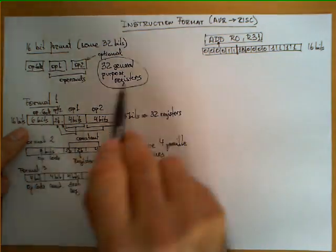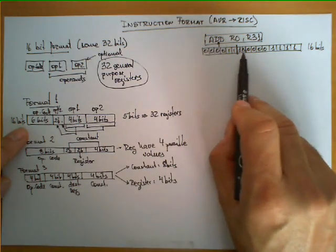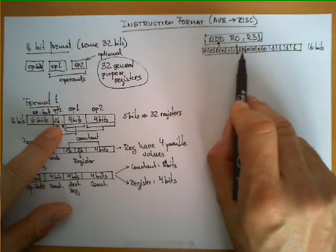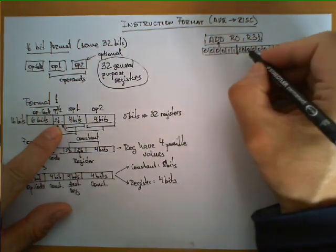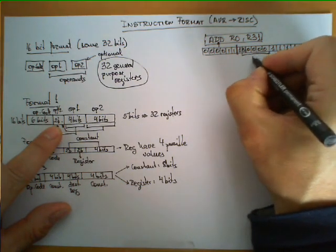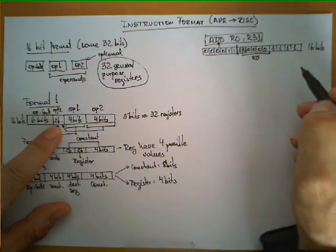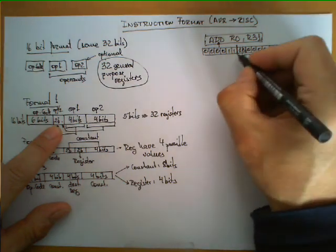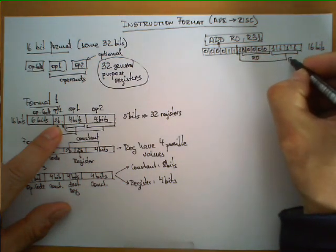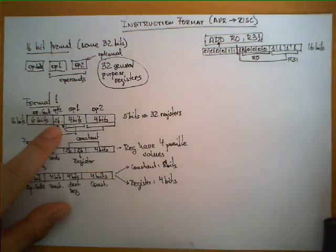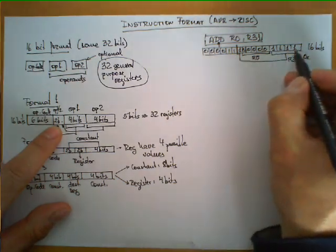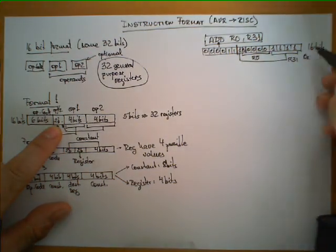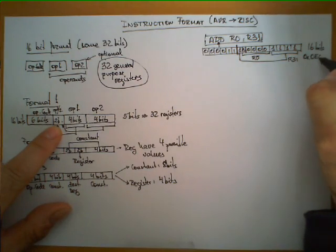We have six bits encoding the instruction, two bits where one is for the source and one for the destination, and the following four bits encode the destination together with a fifth bit. These five bits encode the number 0, corresponding to register 0. The four bits at the end plus one additional bit encode register 31. In memory, this instruction is represented by those 16 bits, or in hexadecimal as 0x0E0F.